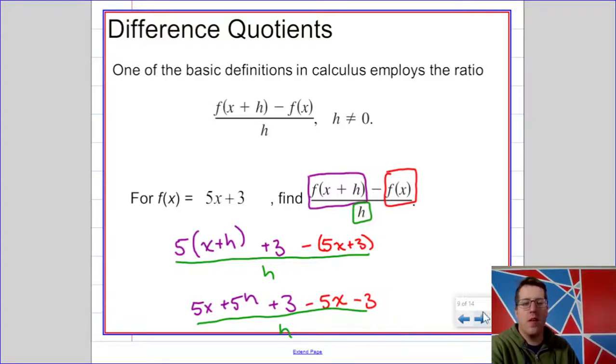So again, this, as far as you know, is just a definition, and there's no what does this all mean yet. Of course, we won't ignore it. If you do this correctly, you should notice some terms that cancel out. So in this one, we have a 5x and a negative 5x, and a 3 and a negative 3. This is going to leave us with 5h over h, or 5.